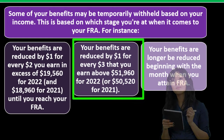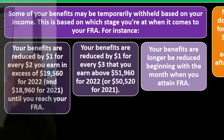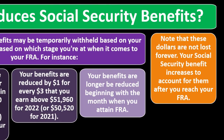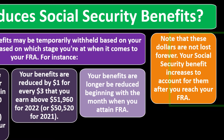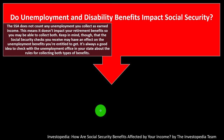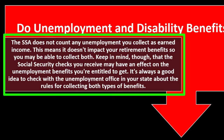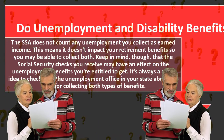Your benefits are reduced by $1 for every $3 you earn above $51,960 for 2022 ($50,520 for 2021), and benefits will no longer be reduced beginning with the month you attain your full retirement age. Note that these dollars are not lost forever — your Social Security benefit increases to account for them after you reach your full retirement age. The SSA does not count any unemployment you collect as earned income.